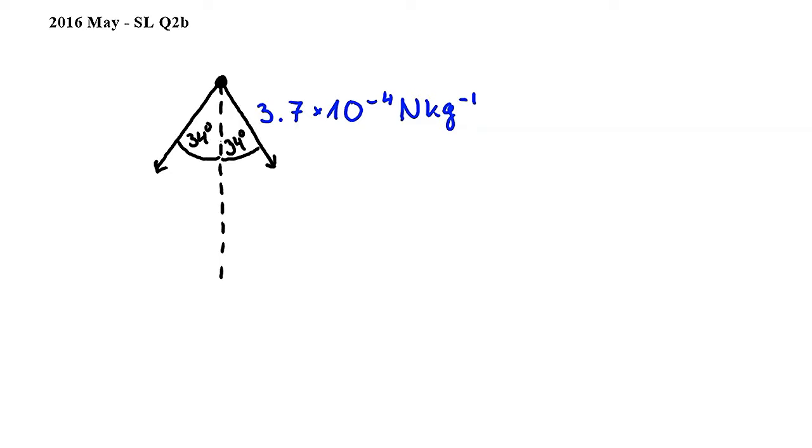In order to find the resultant gravitational field strength, we have to add these two vectors. To add the two vectors, I will move one of them to the end point of the other like this.